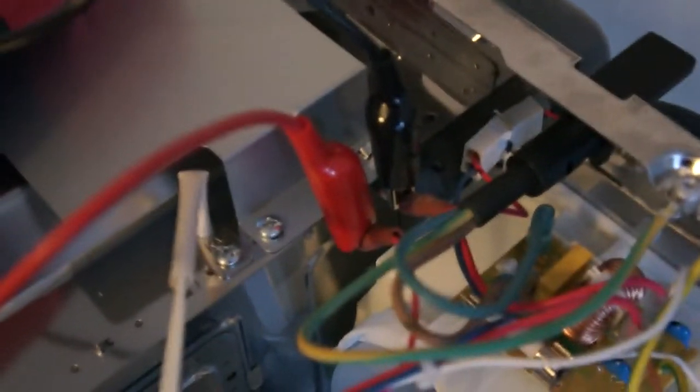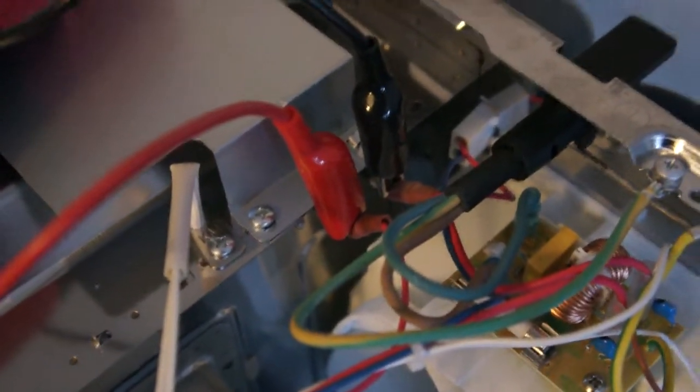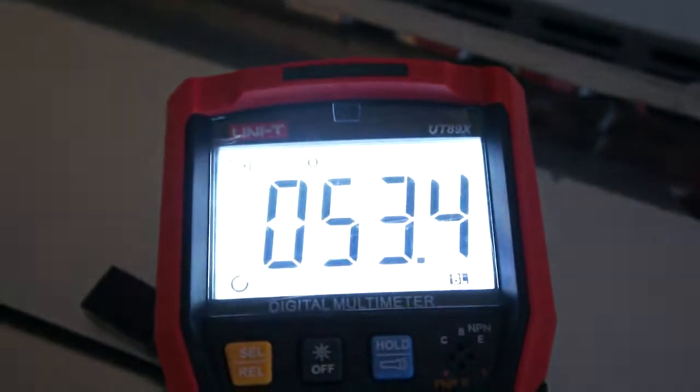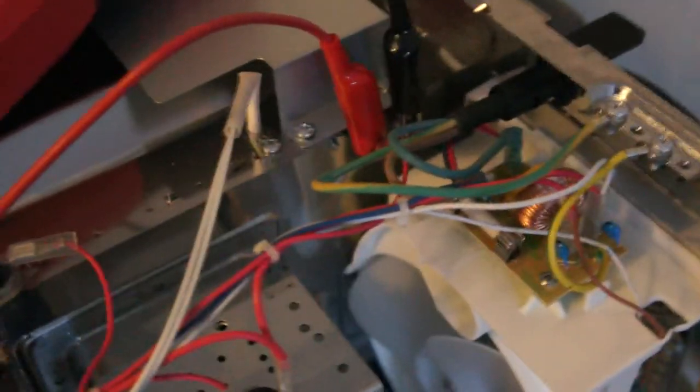I was testing this upper grill element. I've got the wires connected across it and I'm testing resistance. It's 53 ohms, which is a good reading for an oven element.